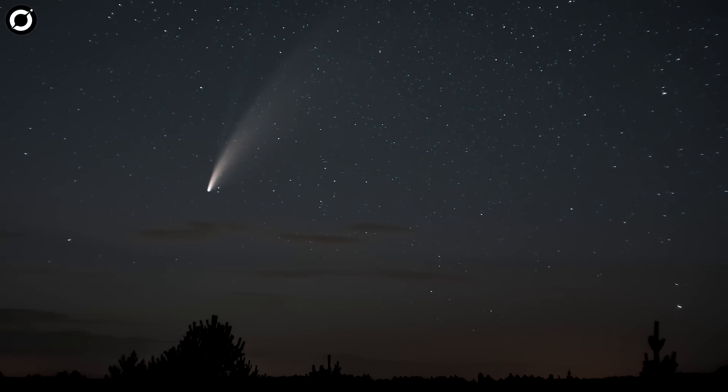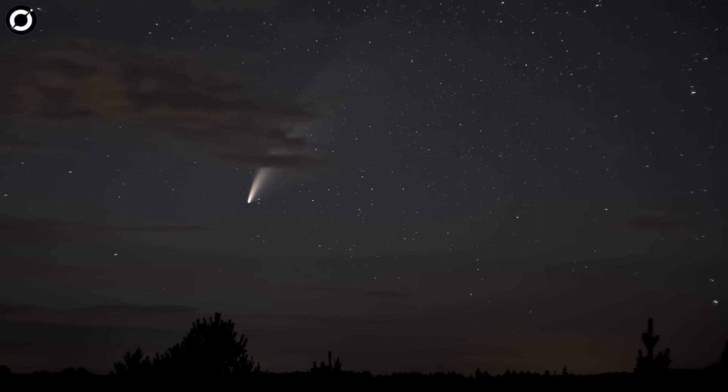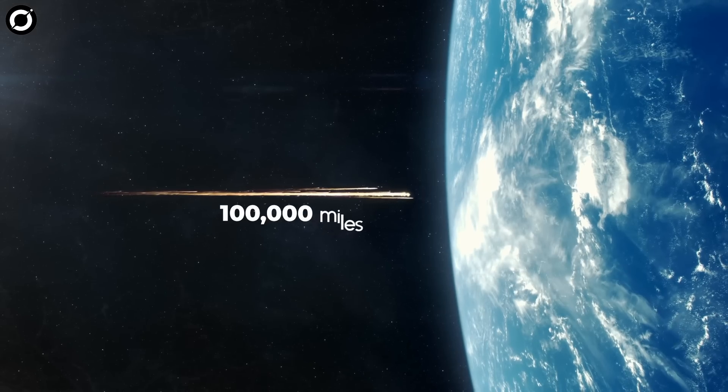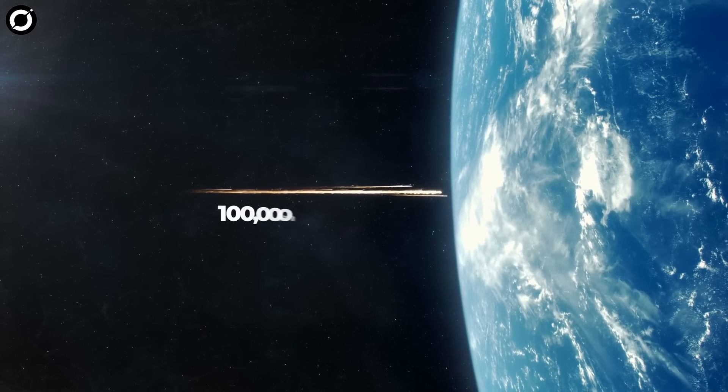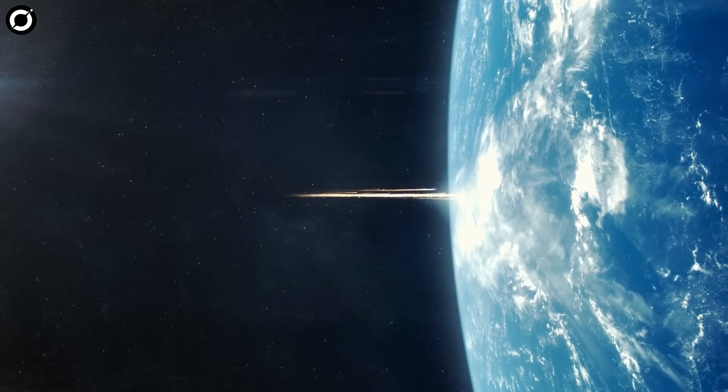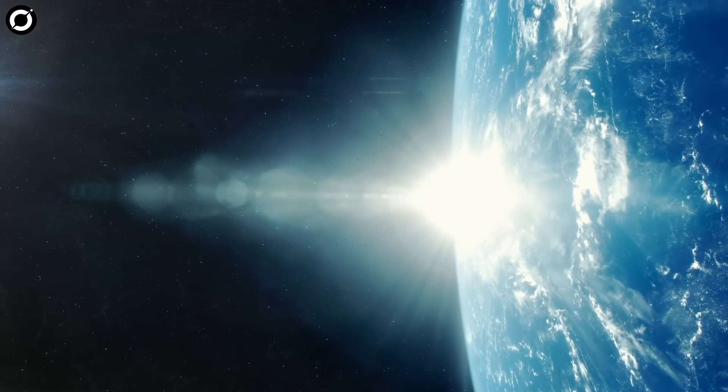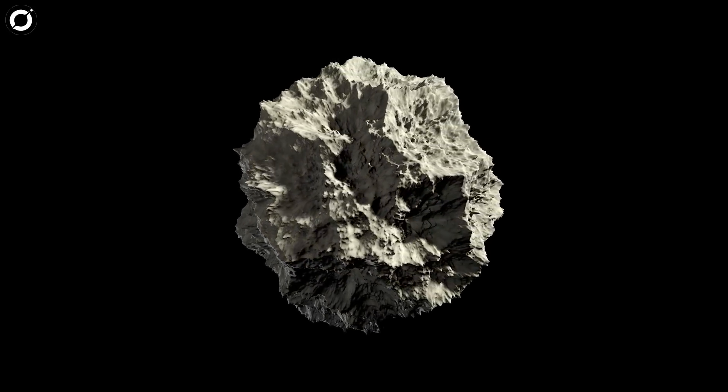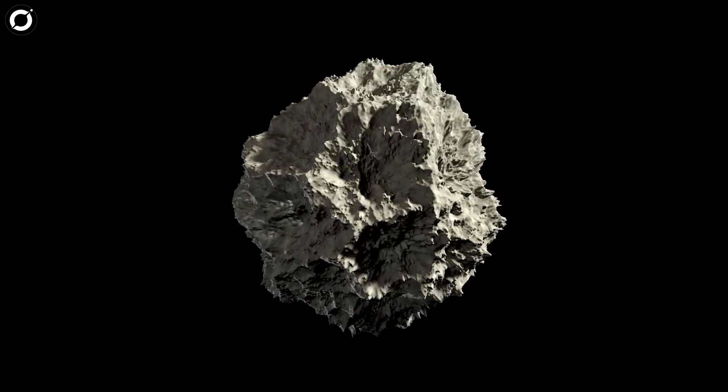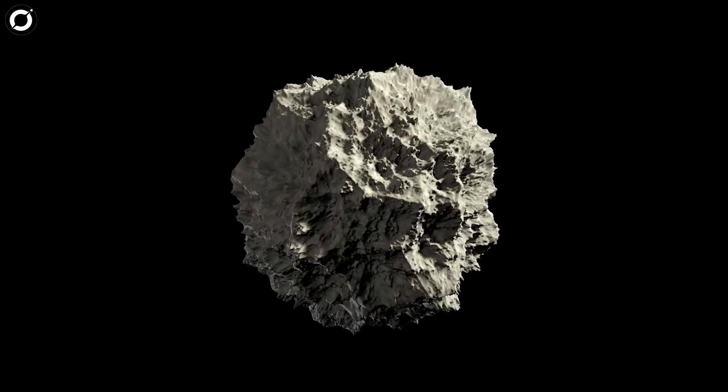A meteor believed to have been about two feet long enters earth's atmosphere at more than 100,000 miles an hour, before exploding into tiny hot fragments that scatter and fall into the South Pacific Ocean. The object wasn't all that big, just a meter or so across, but its significance is massive.